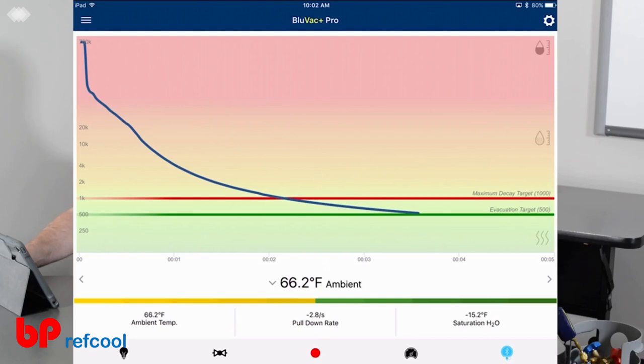We can see our ambient temperature 66.2. We can see our pull down rate, we're doing about 2.6 microns per second. We can see our saturation temperature of water, which is about negative 16. We can see we're at 495 microns. It's still coming down here. Let this continue to pull.